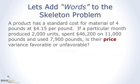Now words have been added to the problem so that you have to search for the data you need. A product has a standard cost for material of four pounds at $4.15 per pound. In a particular month, 2,000 units were produced; $46,200 was spent on 11,000 pounds purchased; and 7,900 pounds were used. Notice that pounds used and pounds purchased are not the same — some could still be in inventory. We isolate the price variance based on what you bought, and the usage variance based on what you used.